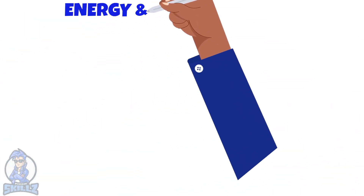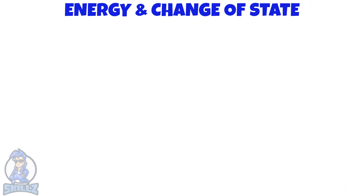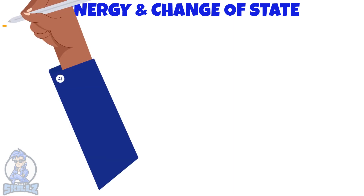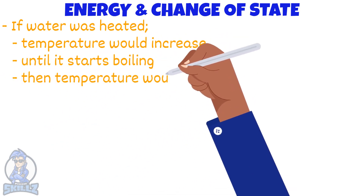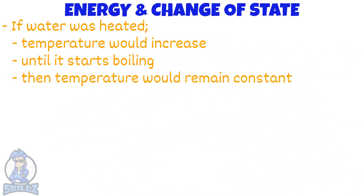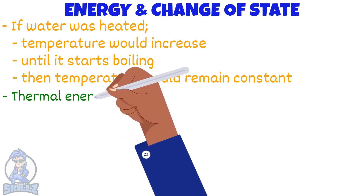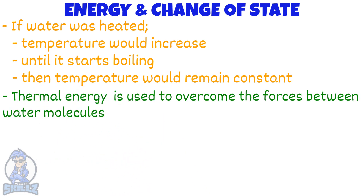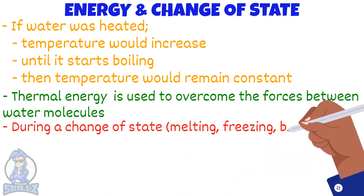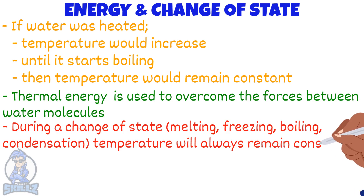Now let's take a look at the energy involved when there's a change of state. If we heat water continuously, the water temperature rises until the water starts to boil, and then the temperature will remain constant until all the water has been turned from a liquid to a gas. The energy supplied is doing work separating the water molecules, so the thermal energy supplied is used to overcome the forces between the molecules of the liquid. During any change of state — melting or freezing, boiling or condensing — the temperature remains constant.